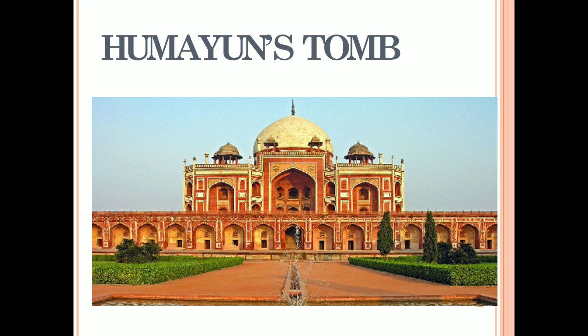The tomb is built with red sandstone in the middle of a square garden. It has a charbagh garden with water channels running at its center. It is one of the most famous garden tombs in India. Several rulers of the Mughal kingdom are buried in this tomb. Humayun's Tomb is now a World Heritage Site.